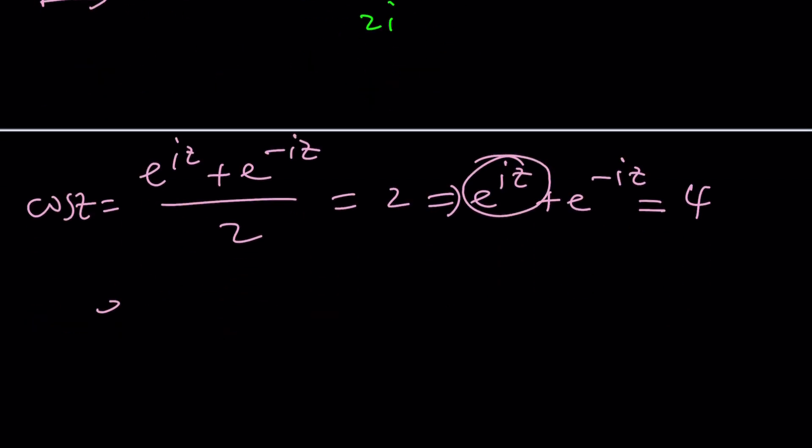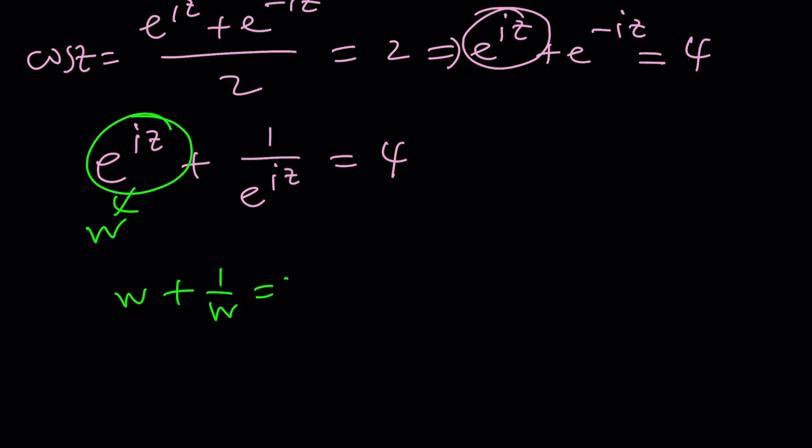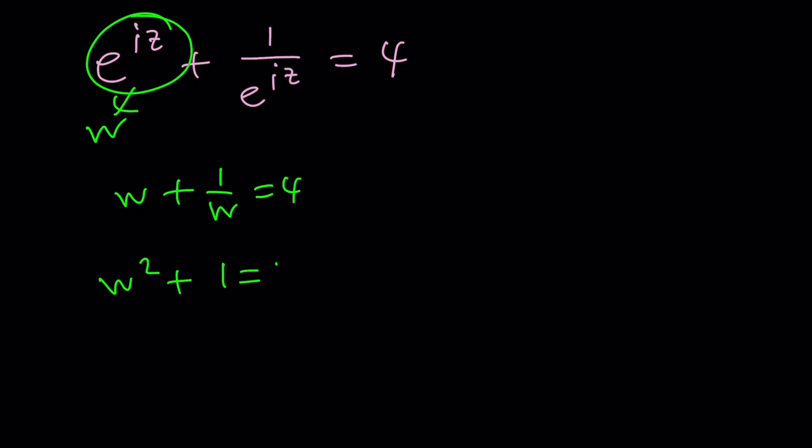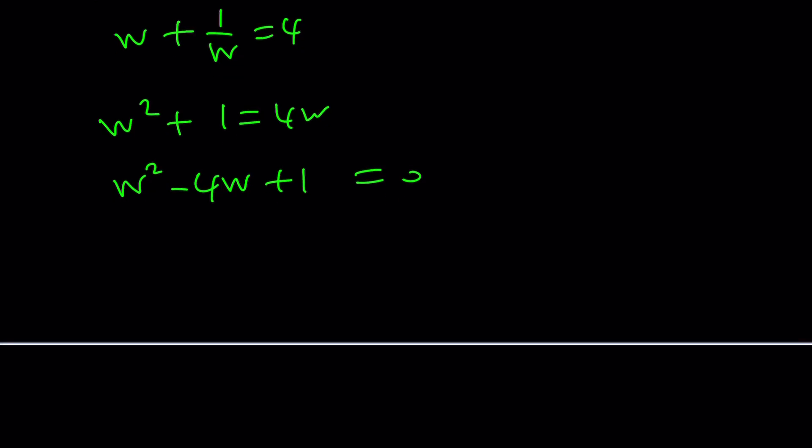From here, we get e to the iz plus e to the negative iz equals 4. We can write this as e to the iz plus 1 over e to the iz equals 4. By way of substitution, let's call this w, we get w plus 1 over w equals 4. Multiply everything by w, w squared plus 1 equals 4w. Bring this w over here, w squared minus 4w plus 1 equals 0. By way of quadratic formula, w equals negative b plus minus the square root of b squared minus 4ac, divided by 2. This is 4 plus minus the square root of 12, which is 2 root 3, divided by 2, so that's 2 plus minus root 3.